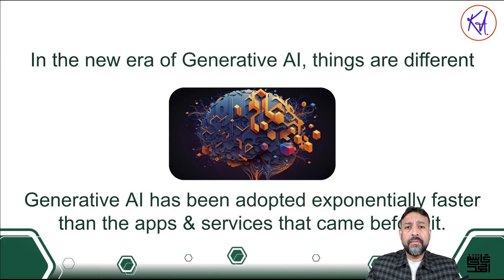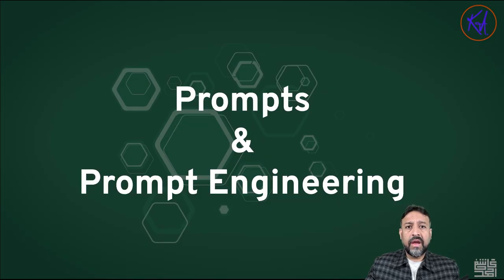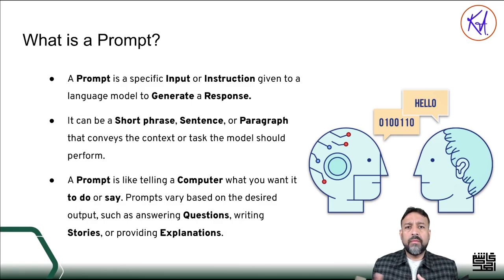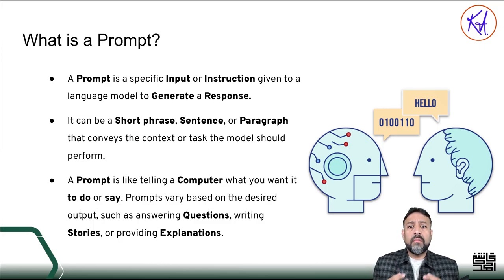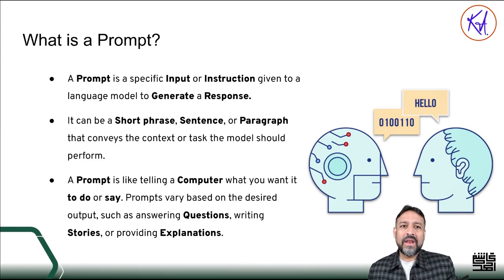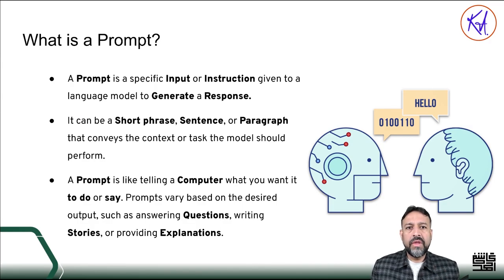Now let's talk about prompt and prompting — how to write a better prompt and how they relate to generative AI. A prompt is simply a specific input instruction that we give to a large language model — an AI program that can generate natural language responses. For example, if you want a model to answer a question, write a story, or explain something, you need to give it a prompt and tell it what to do. The quality and relevance of the output depends largely on the prompt — how complete, clear, concise, and specific it is. The more clear and specific you are, the better the results from the AI.